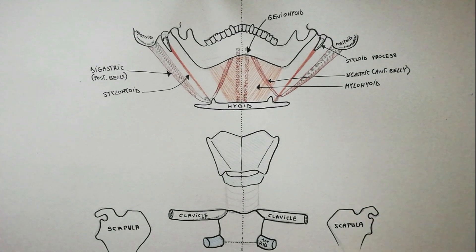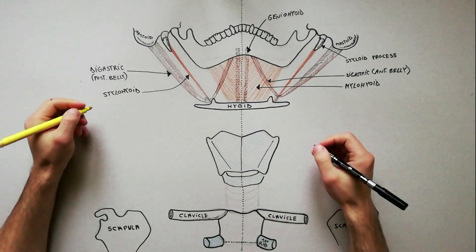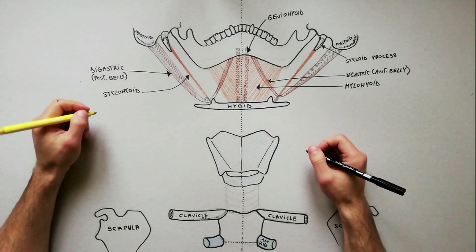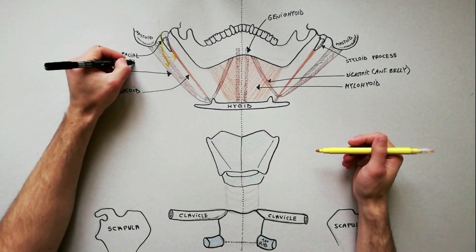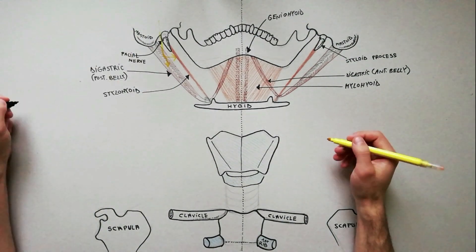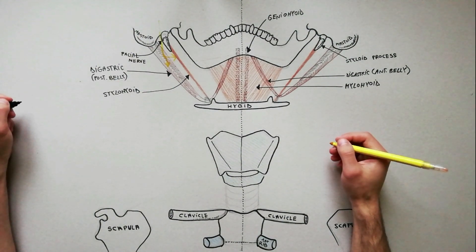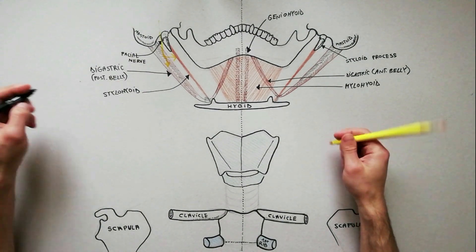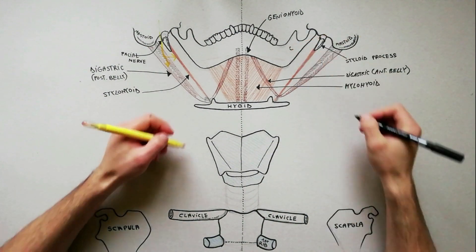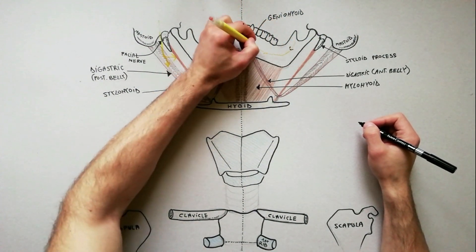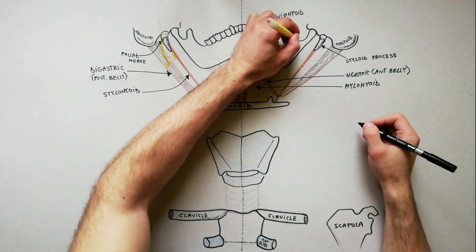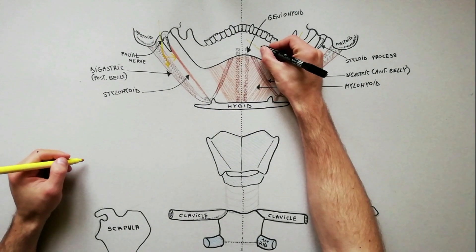The innervation of the suprahyoid muscles is as follows. The posterior belly of the digastric and the stylohyoid are innervated by the facial nerve. The anterior belly of the digastric and the mylohyoid are innervated by the mylohyoid nerve, which is a branch of the inferior alveolar nerve.